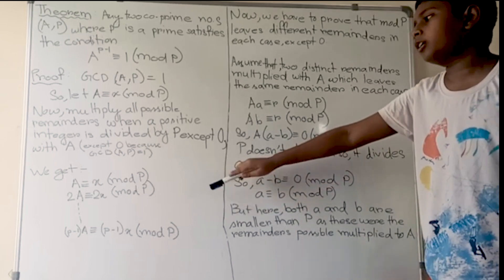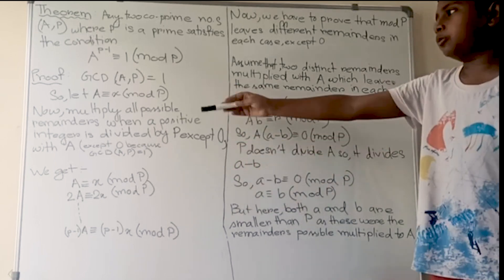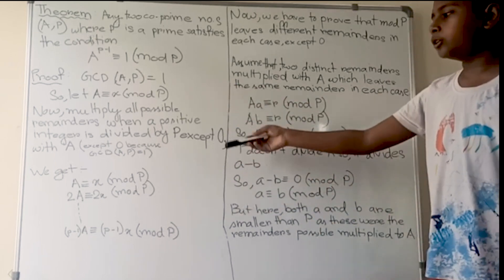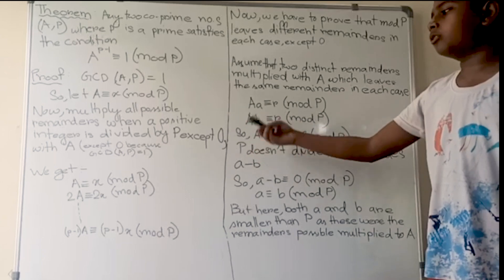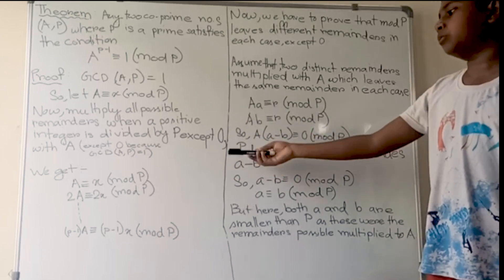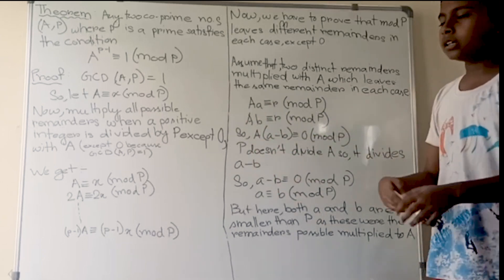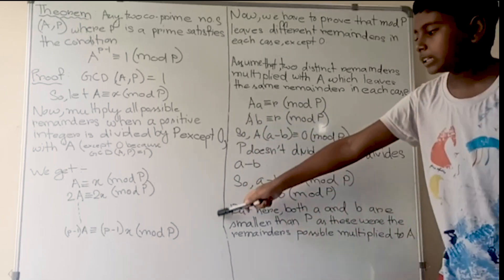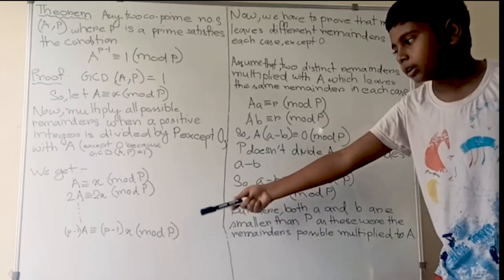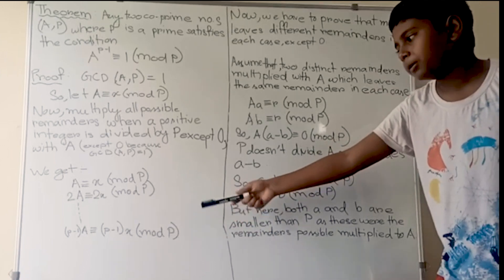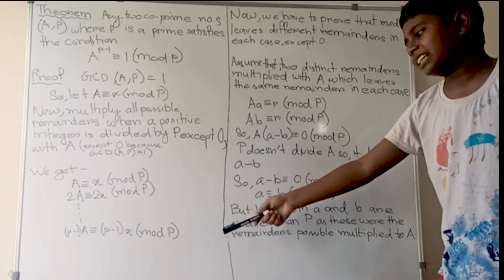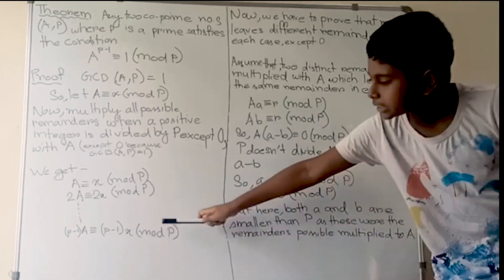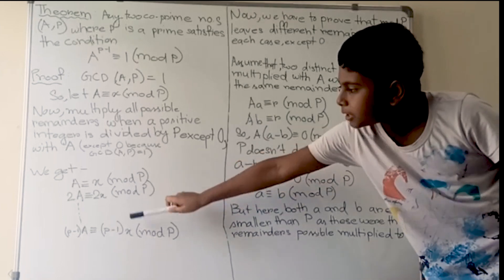Using the property of modular arithmetic, we write: a is congruent to x mod p, 2·a is congruent to 2·x mod p, and so on, up to (p−1)·a is congruent to (p−1)·x mod p.